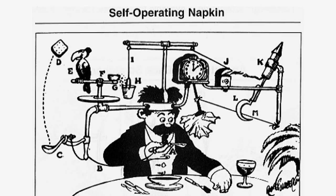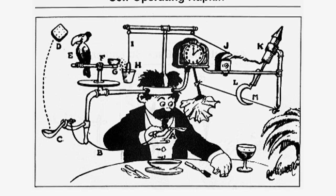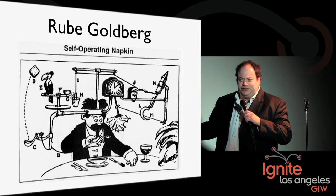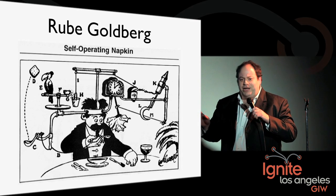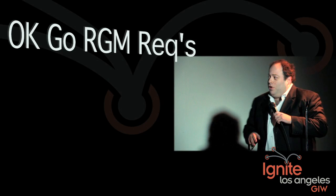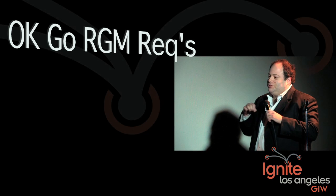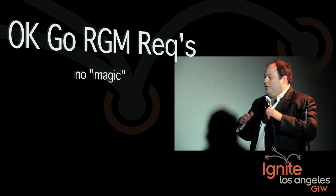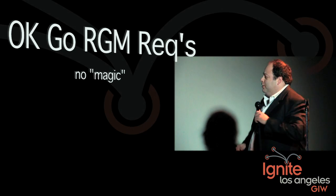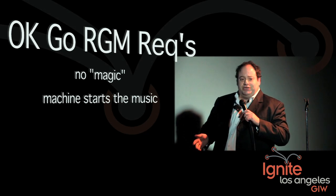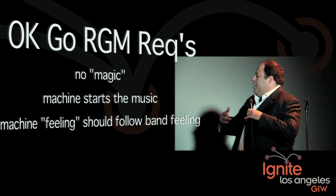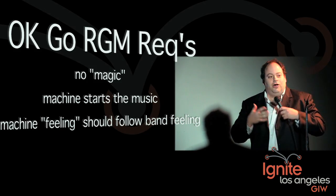We were a little overwhelmed — it's a really exciting project, but we were really excited about it. You guys are all familiar with Rube Goldberg machines, right? The most complicated way to do a simple thing. Well, they didn't have a specific requirement, but they had some broad requirements: no magic, everything had to be understandable by your mom. The machine had to start the music — that is, the machine starts before the music part of the video starts. And the machine's feeling should follow along with the feeling of the song. Relatively straightforward so far.